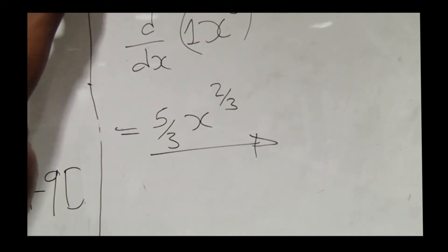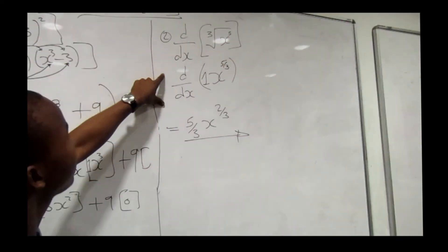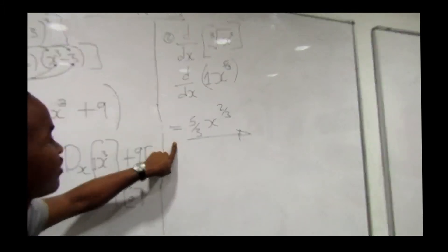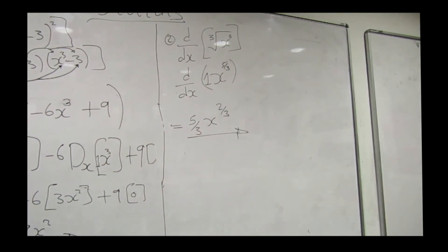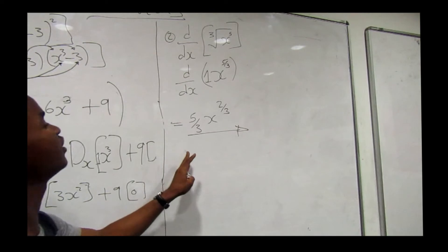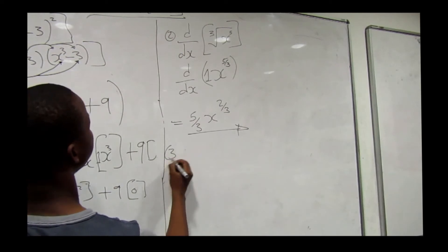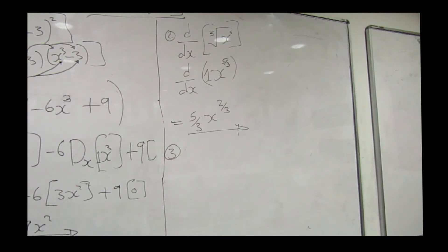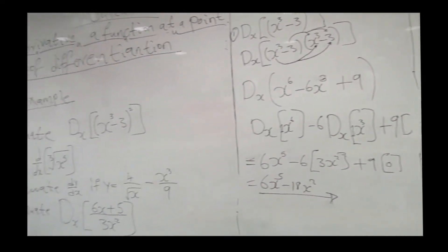This is our answer. Remember, your first step is to convert the radical to exponential form, then differentiate and write the result. If simplification is needed you can simplify, but it was not required here.